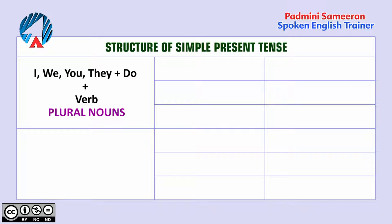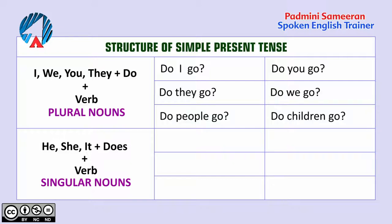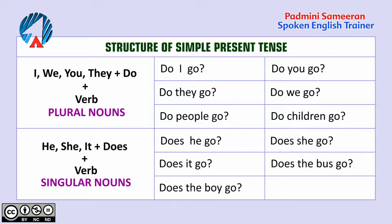Now let's look at the structure of the interrogative form — the question form. We use 'do' with I, we, you, they, and plural nouns. With he, she, it, and singular nouns, we ask questions with 'does'. So: do I go? Do you go? Do they go? Do we go? Do people go? Do children go? And with 'does': does he go? Does she go? Does it go? Does the bus go? Does the boy go? Does the child go? So it's quite simple to understand how we use do, does, don't, and doesn't, and when we use the verb without the S and with the S.